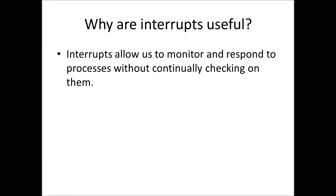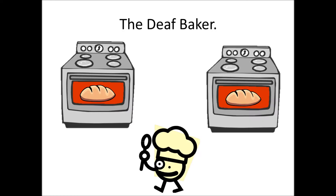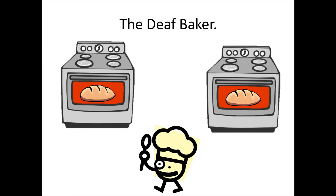Let me do an illustrated example. We've got a deaf baker. He's baking bread and he's got two ovens going. He's deaf, so he can't hear the alarm when it goes off, so he just keeps looking at the alarms to see if they're done, keeps looking at the bread to see if it's done baking. He looks back and forth, back and forth, frantically watching these two ovens.